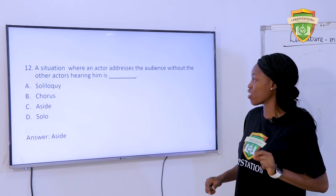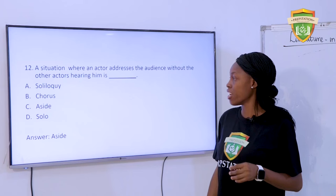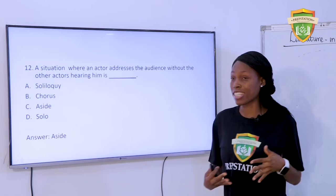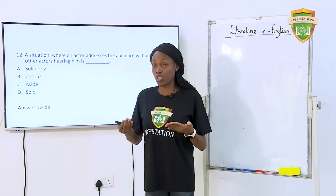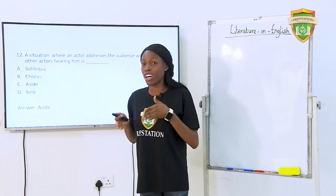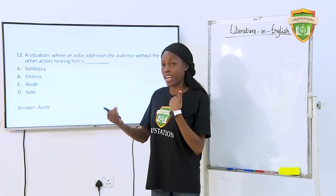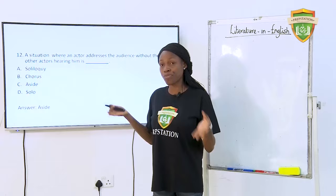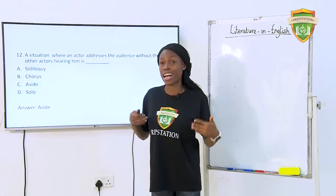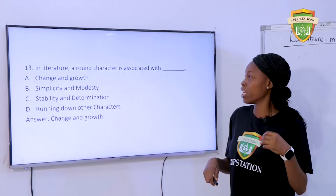The situation where an actor addresses the audience without the other actors hearing is — A. Soliloquy. B. Chorus. C. Aside. D. Solo. The answer is an aside. An aside is different from a soliloquy. While in a soliloquy the character expresses inner thoughts alone on stage, in an aside other characters could be on stage and the character turns to one side and gives his opinion such that the audience hears but the other characters do not.